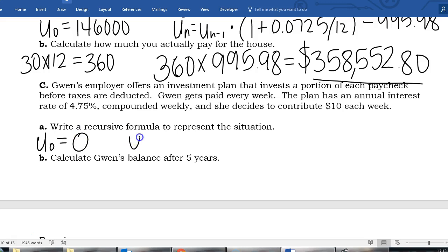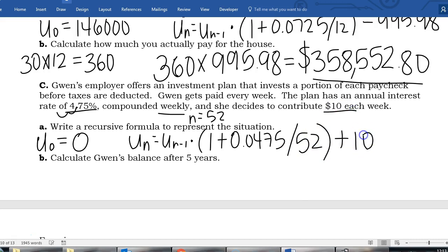So whatever value is in there is going to earn some interest. Since we are earning 4.75 percent we're going to convert that to a decimal, remember move that decimal two places, fill in your zeros. And since we are compounding weekly that means n is 52 because there are 52 weeks in one calendar year. And we are adding $10 to our account each week so we're going to do a plus 10 at the back there. And then we're going to find her balance after five years. Now this is another one where I'm not actually going to do it.